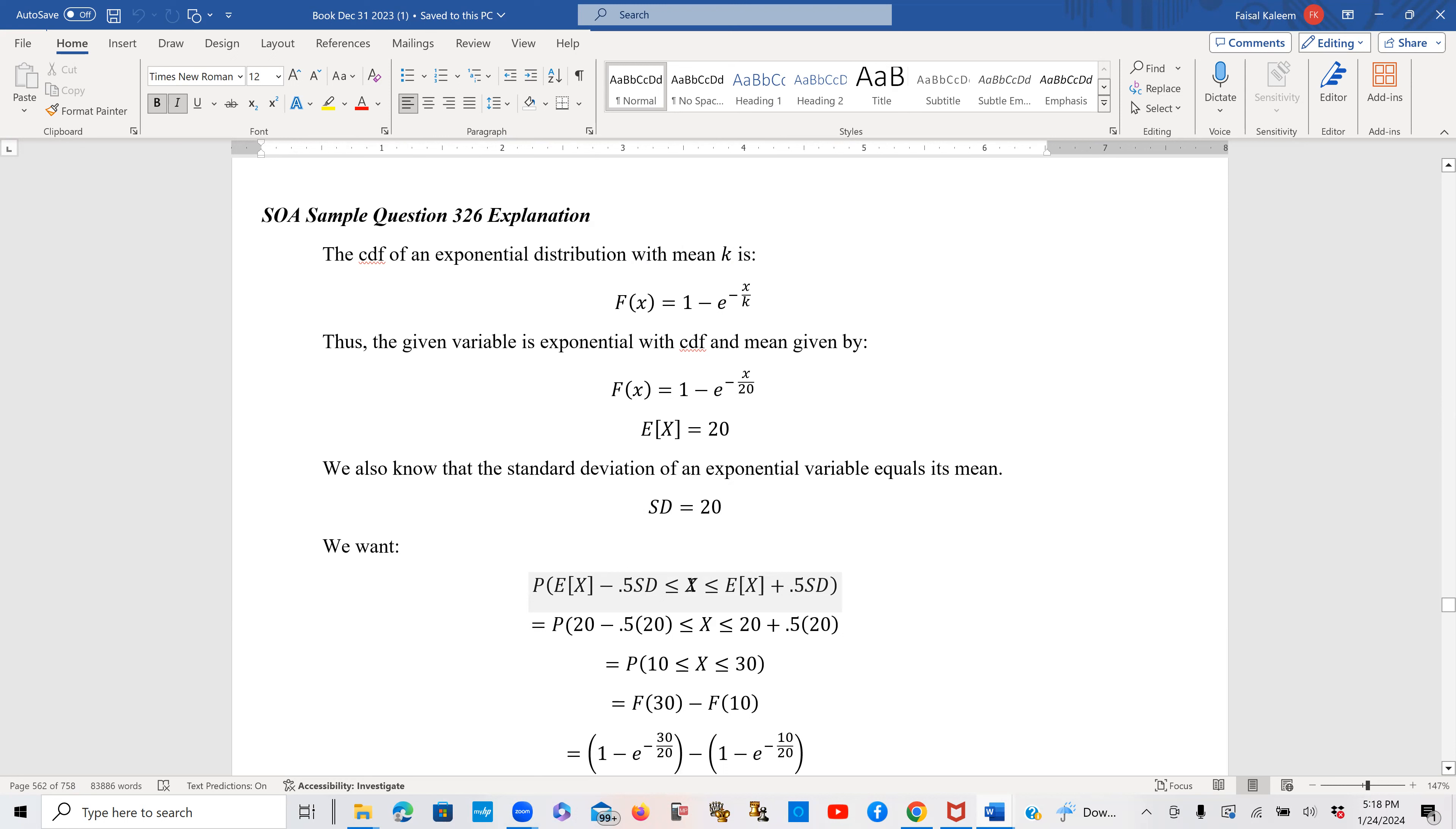And that means it needs to be between mean minus 0.5 standard deviations and mean plus 0.5 standard deviations. So mean is 20 minus 0.5 times standard deviation is also 20. So this gives a total of 10.